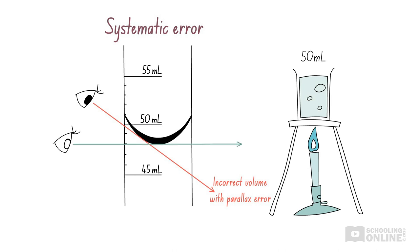Instead, we should measure the volume of water by looking from eye level. If so, we would realise that we only have 48ml of water. Because of parallax error, we measure out slightly less water, so our water will boil faster.